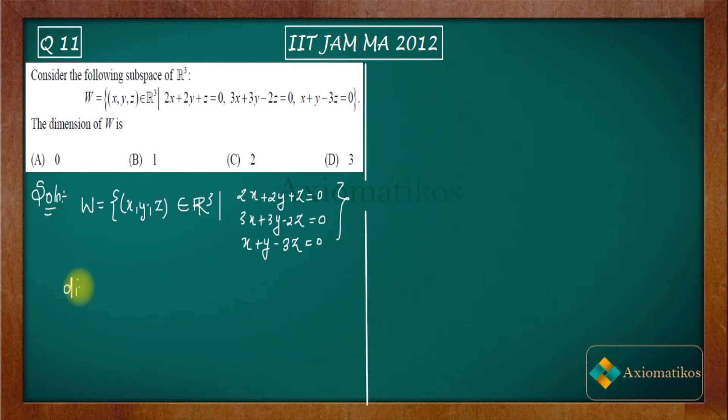Now what result I am going to use? I will use directly this result: suppose W is a subspace of a vector space V, then dimension of that subspace is dimension of V minus number of linearly independent restrictions to it.